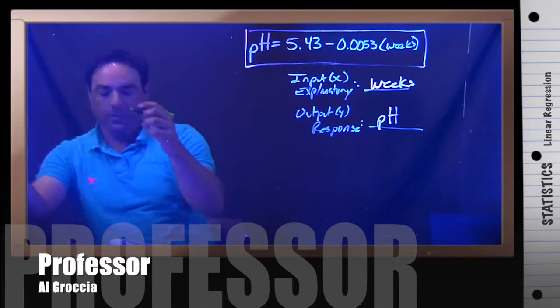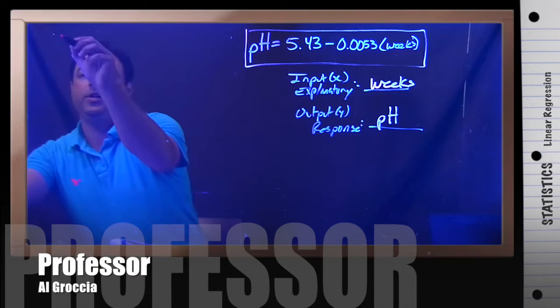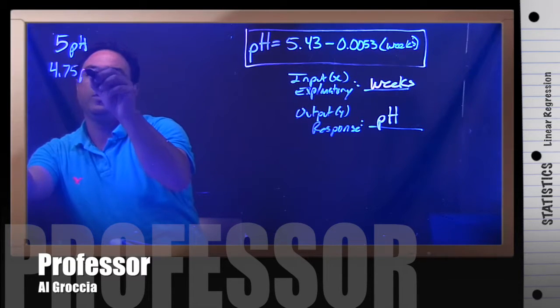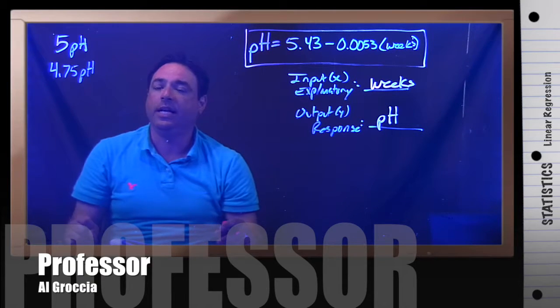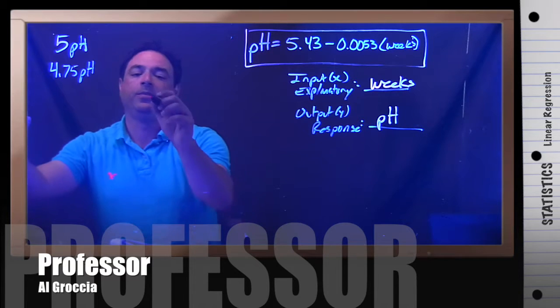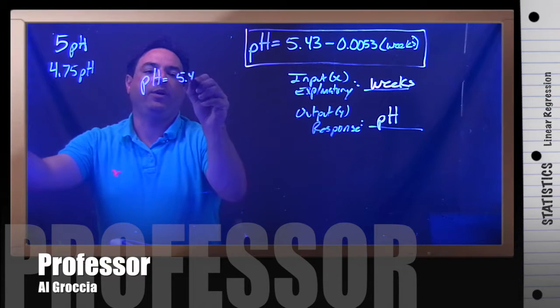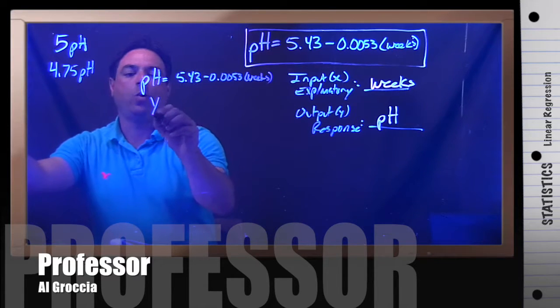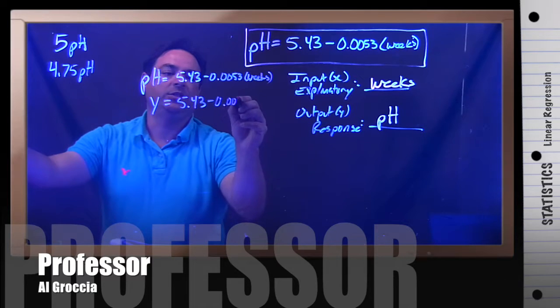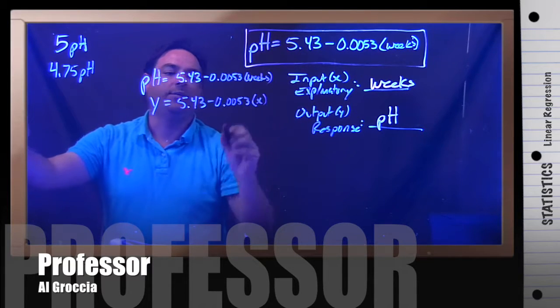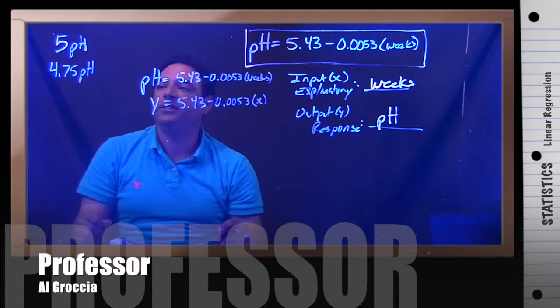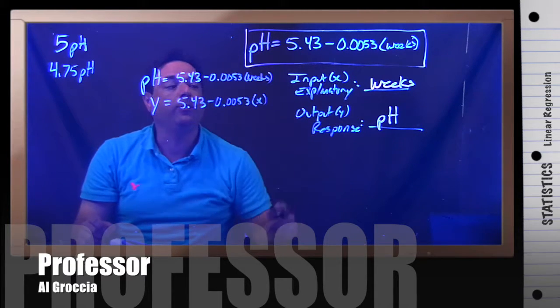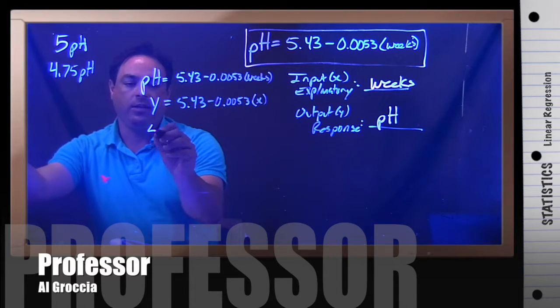Our next question is, given a pH of 5 and given a pH of 4.75, what is our predicted week that the pH will reach 5 and the pH will reach 4.75? So start with our equation: pH equals 5.43 minus 0.0053 times weeks, which can be written as y equals 5.43 minus 0.0053 times x. So in this case, we have to be careful. For the first question of what week will the pH reach 5, we have to determine if the 5 goes in for x or goes in for y. And again, that's why this is very important. pH is y, so we plug in the 5 here.